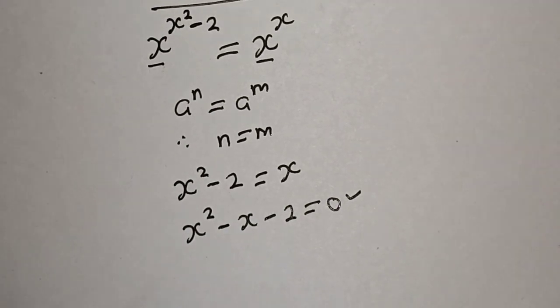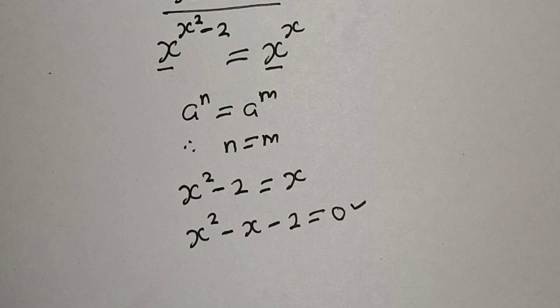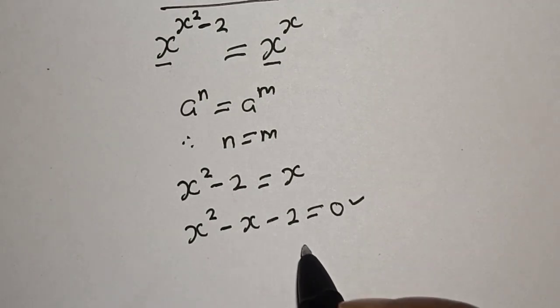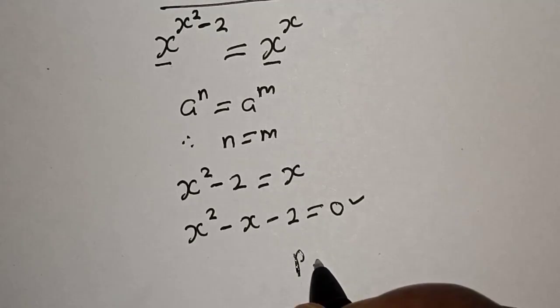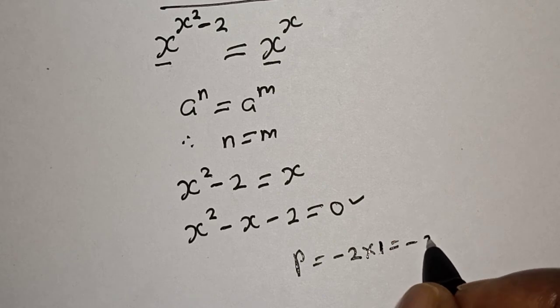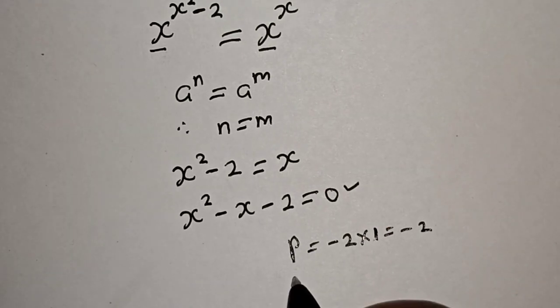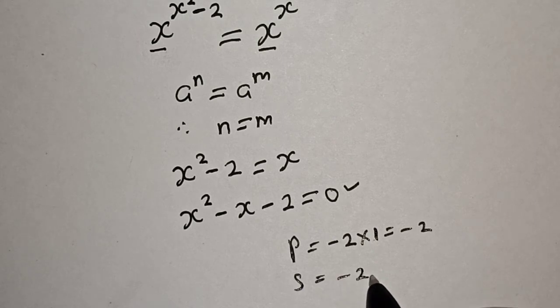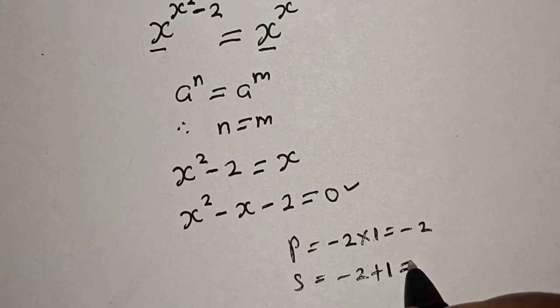Let's use the factorization method. The coefficient of x is minus 1 and the constant is minus 2. Therefore the product p is equal to minus 2 multiplied by 1 which is equal to minus 2, and the sum s must be equal to minus 2 plus 1 which is equal to minus 1. Let's substitute.